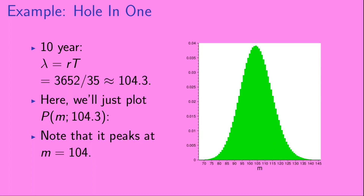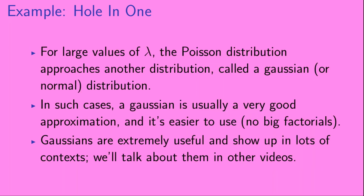For the 10-year case, λ = rt ≈ 104.3, and the distribution peaks at m = 104. For large values of λ, the Poisson distribution approaches another distribution called a Gaussian, or normal distribution. In such cases, a Gaussian is usually a very good approximation, and it's easier to use because it doesn't have any big factorials in it. Gaussians are extremely useful and show up in lots of contexts, so we'll talk about them in other videos.